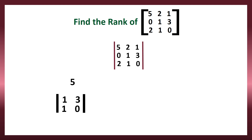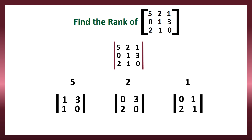So the minor of 5 is the determinant of [1, 3; 1, 0], the minor of 2 is the determinant of [0, 3; 2, 0], and the minor of 1 is the determinant of [0, 1; 2, 1]. A minor is like a determinant, but when finding it for a particular element, we remove that element's row and column and compute the determinant of the remaining elements. The highest minor of a square matrix uses all its elements.